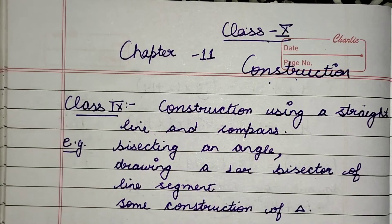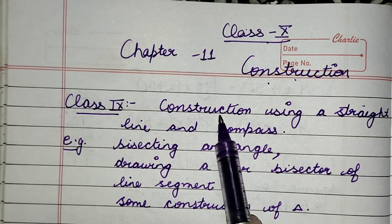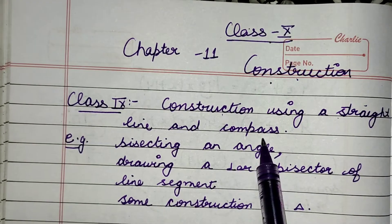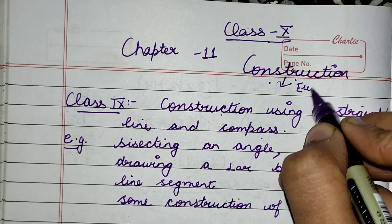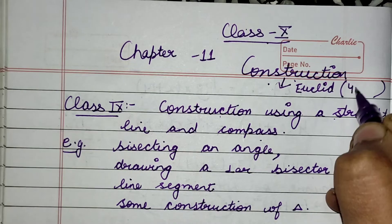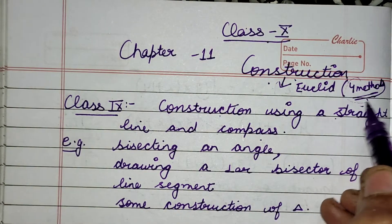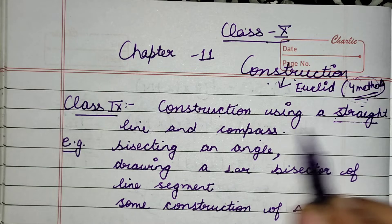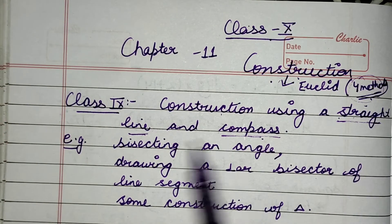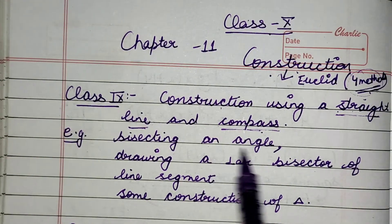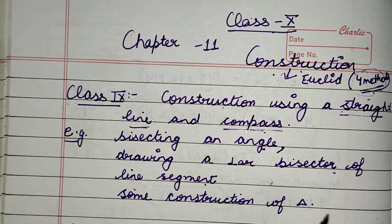Let us understand what construction is and what you have learned earlier in class 9th. In class 9th you learned the method of construction using a straight line and compass. Euclid was a scientist who used around four basic methods of construction. Among those four methods, you learned only one method in class 9th — using a straight line and compass — to bisect any angle, draw a perpendicular bisector of a line segment, and draw some constructions of triangles.